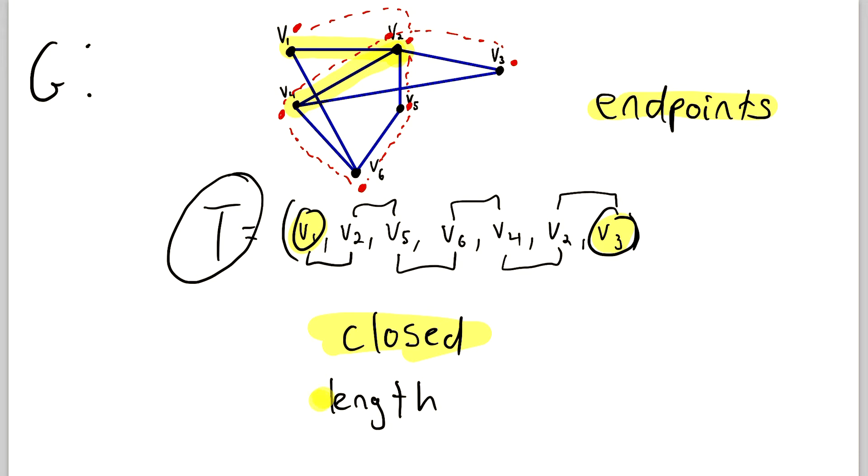Also, we can say that the length of our trail T is the number of edges encountered during the trail. And of course, we can count those easily. 1, 2, 3, 4, 5, 6 edges were encountered in the trail T, so we can say that it has a length of 6, which you might notice is 1 less than the number of vertices encountered in a trail, which is a rule that holds true for trails and walks.